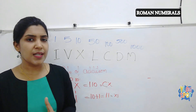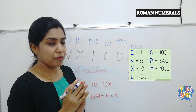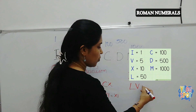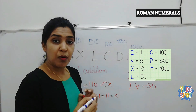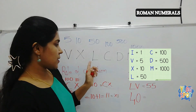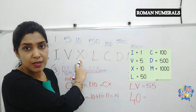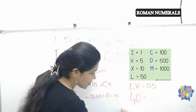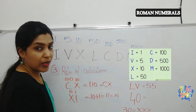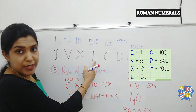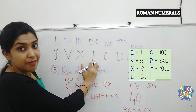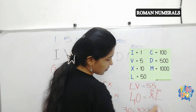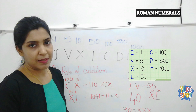Let's try some examples. How to write 55? 50 is L, then 5 is V, so 55 is LV. How to write 40? We cannot repeat X four times — only three times is allowed, so XXX gives 30. For 40, we use the subtraction rule: L represents 50, and if we write X before it, that is XL. 50 minus 10 equals 40, so XL represents 40.